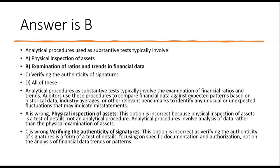Physical inspection of assets is a test of details, not an analytical procedure. Analytical procedures involve analysis of data rather than physical examination of assets. Verifying the authenticity of signatures is also a form of test of details — it focuses on specific documentation, not on the analysis of financial data trends or patterns. So letter B is correct.